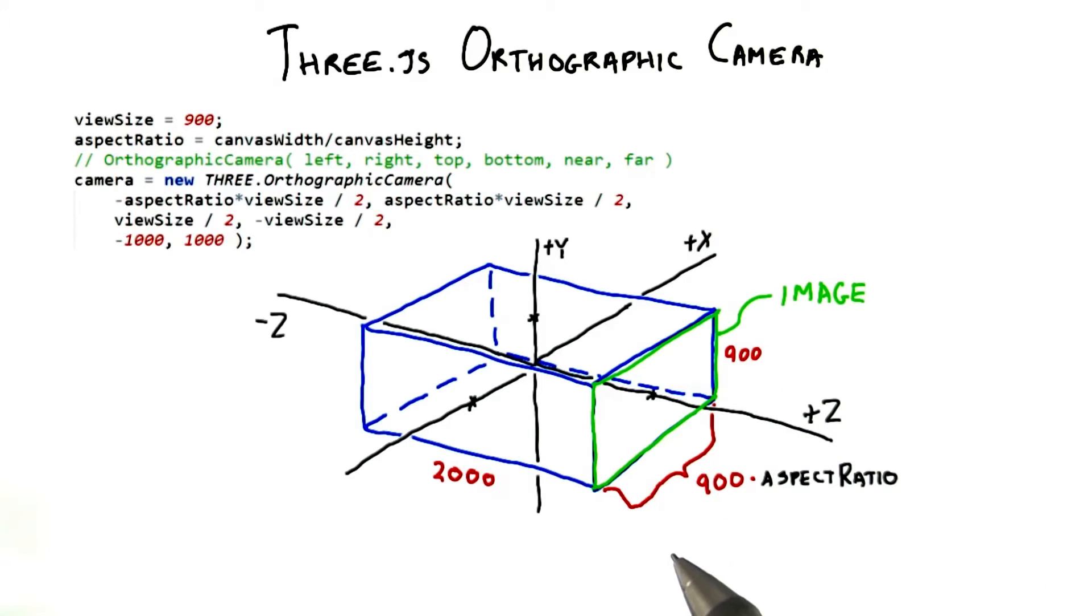For example, if your view was 1,000 pixels wide and 500 high, the aspect ratio would be equal to 2. In other words, you'd want your box to be twice as wide as it is tall. If you don't, you'll get a stretched view of the world, which is probably not what you wanted.